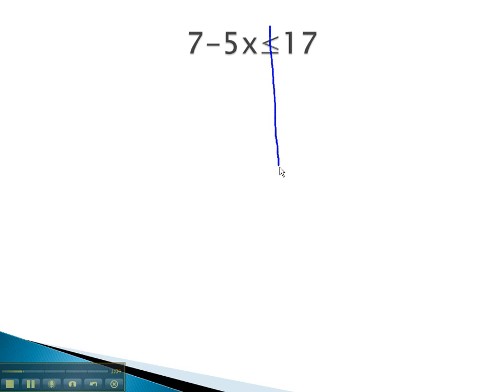Before, we would balance through the equal sign. Now, we balance through the inequality sign. To get x alone, we start with the addition and subtraction by subtracting 7 from both sides of the equation. This gives negative 5x is less than or equal to 10.